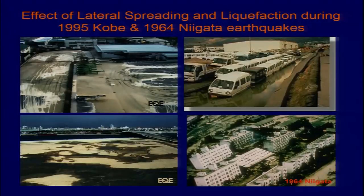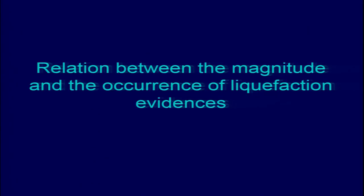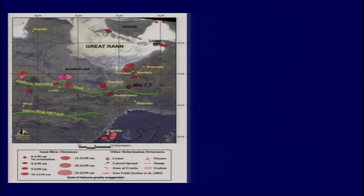This is from 1964 Niigata — another picture of a similar phenomenon. This is the relationship between magnitude and the occurrence of liquefaction evidence. We can look at old liquefaction features and try to understand which area had maximum intensity or impact. This was another exercise done after the 2001 Bhuj earthquake, looking at the dimension of features — sandblow thickness — and the type of features formed: craters, lateral spreads, cracks, tear faults, slumping, or grabens.